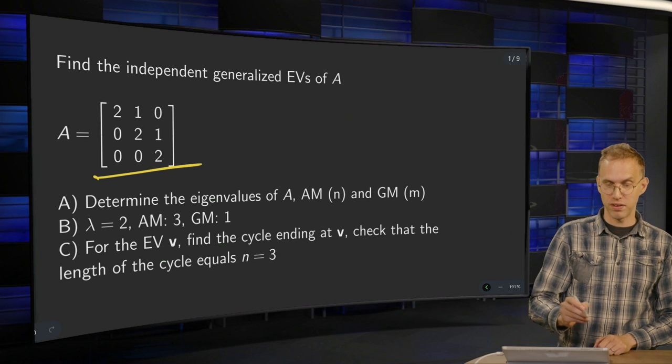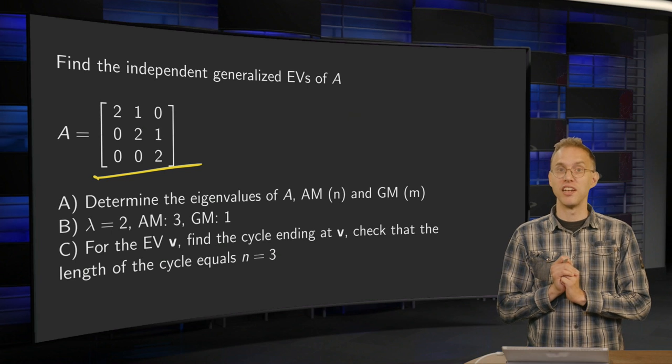So we have a matrix A over here. Question: find the independent generalized eigenvectors of A.